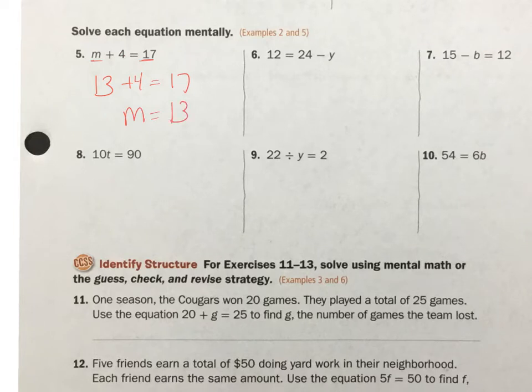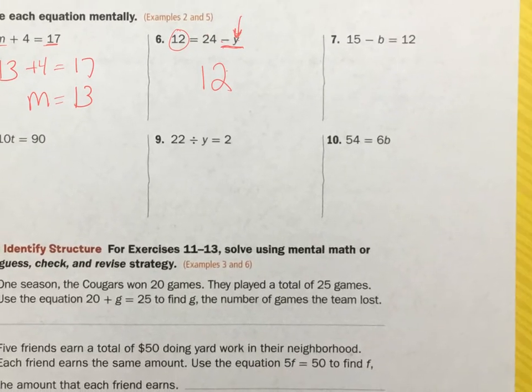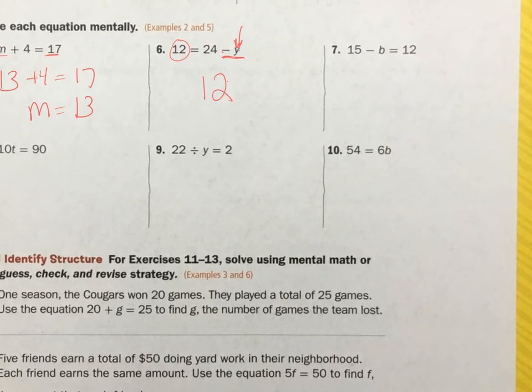Alright. 12 equals 24 minus y. I've got to figure out what this y is. I know that if it's 12, I just do this kind of mentally. 24 minus 12, that's going to give me this 12. I'm always going to check my answer to make sure.